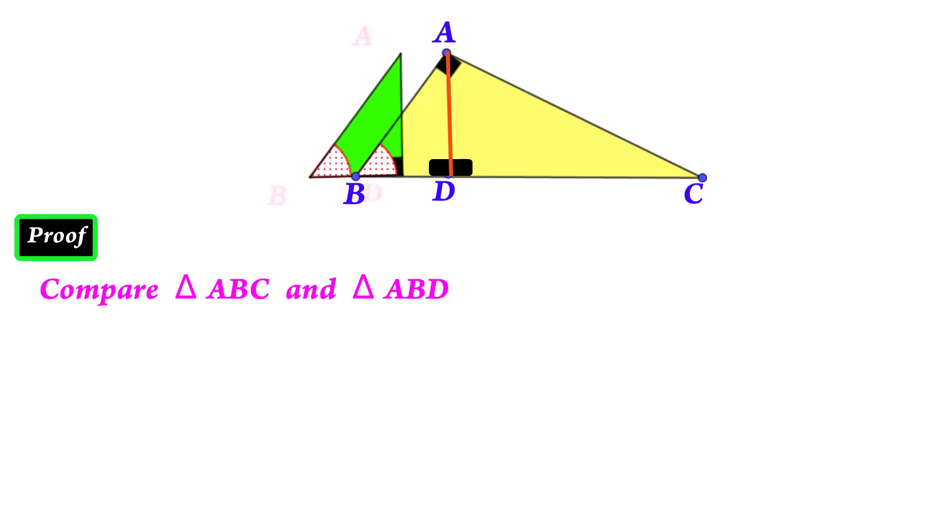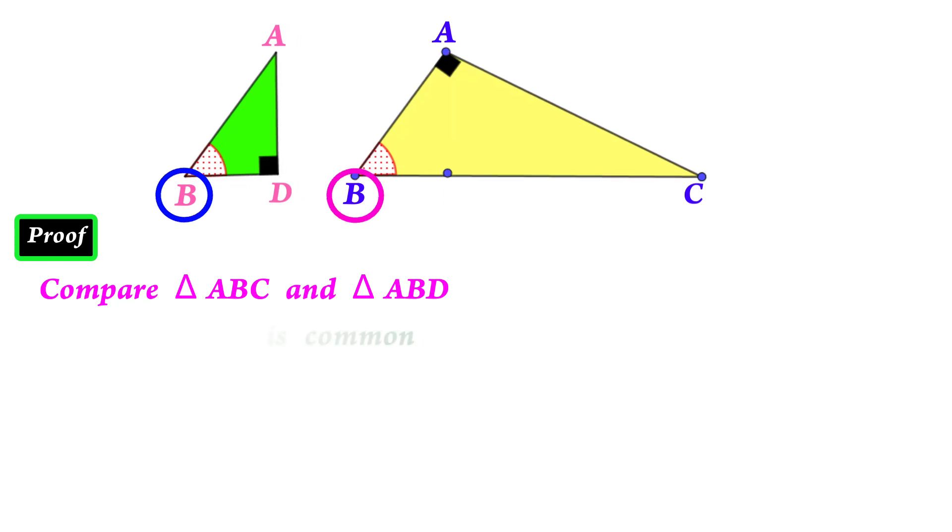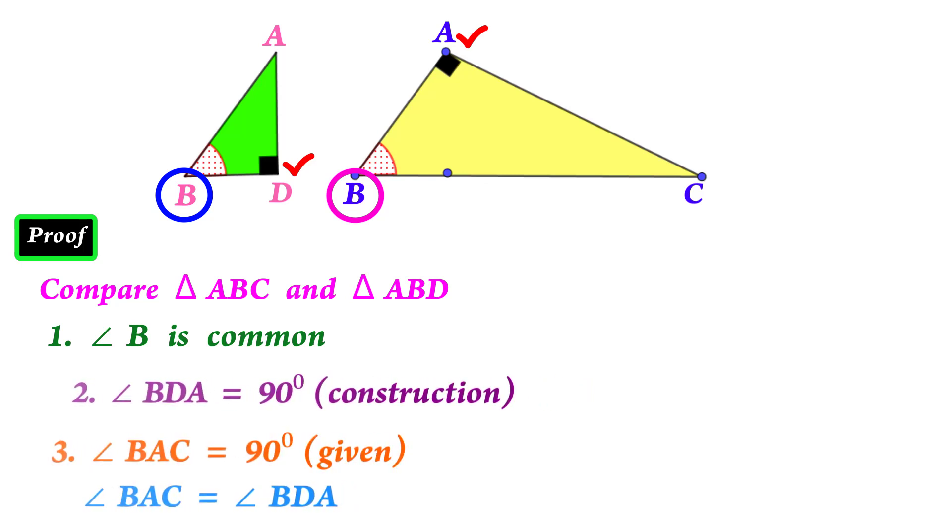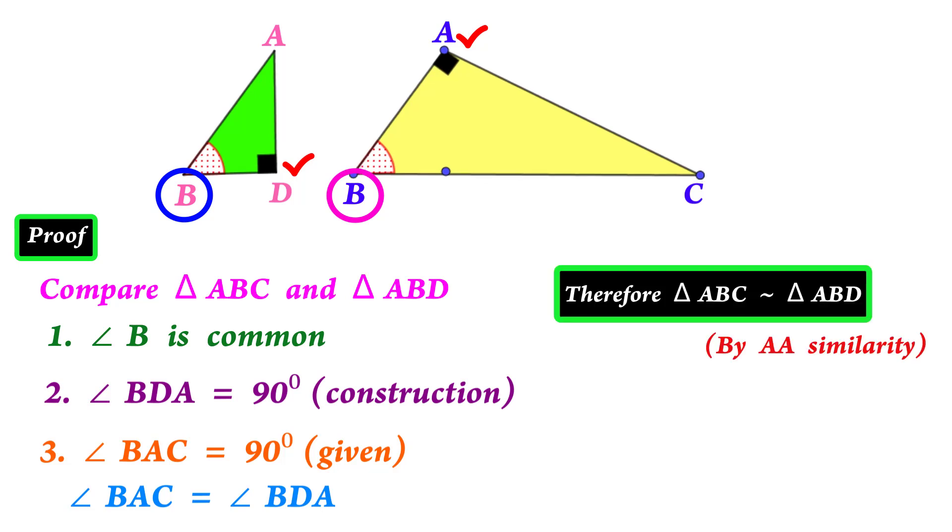Now look at these triangles. What do you observe in common? Yes, angle B is common. One angle is 90 degrees. Right? That's enough. We can say that triangle ABC is similar to triangle ABD.